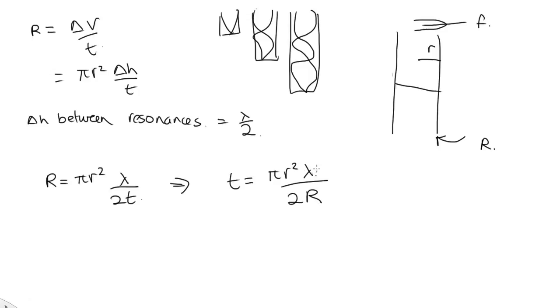However, we don't know lambda. We do know the frequency and the velocity. So v is equal to f lambda. It tells us that lambda is equal to v on f. So the time between these resonances is pi r squared over 2R times v over f.